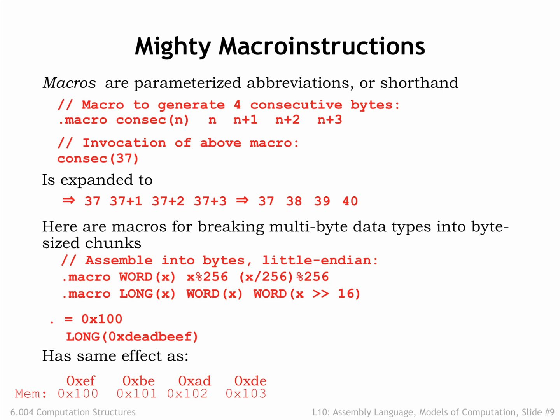So the least significant byte 0xef is placed at address 0x100, and the most significant byte 0xde is placed at address 0x103. This is the little-endian convention for multibyte values — the least significant byte comes first. Intel's x86 architecture is also little-endian.